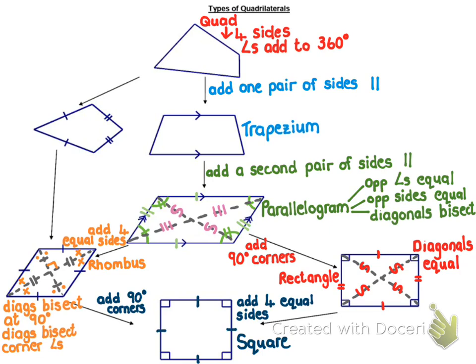So a square has both pairs of opposite sides equal, but since it's a rhombus, it has all four sides equal. It has all four corner angles of 90 because it's a rectangle. It has diagonals that are equal because it's a rectangle, and hence they bisect, giving four equal parts. It also has diagonals bisecting at 90 because it's a rhombus, and it also bisects the corner angles, so all corner angles are cut into equal halves.